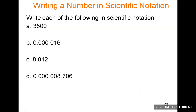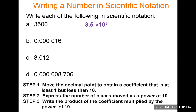Let's practice. Write 3,500 in scientific notation. The decimal point is implied after the last zero. Move it to the left: 1, 2, 3 times to land between the 3 and the 5, giving 3.5. We moved three times, and we started with a large number, so the exponent is positive. The answer is 3.5 × 10³.